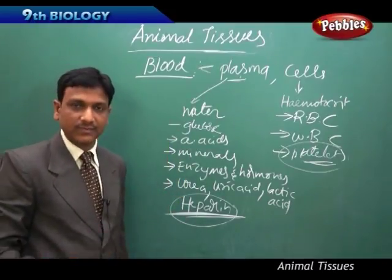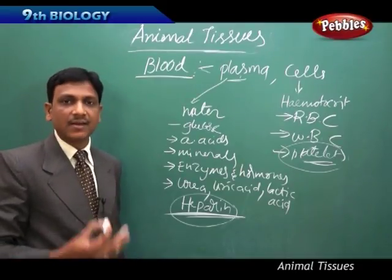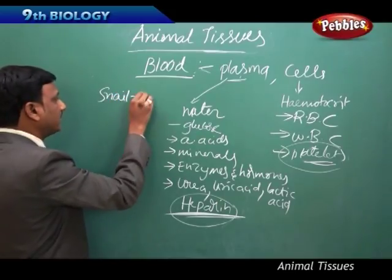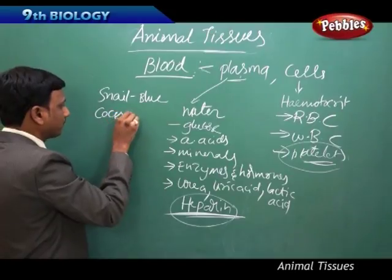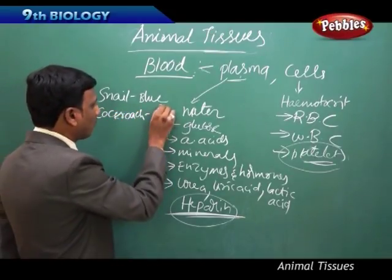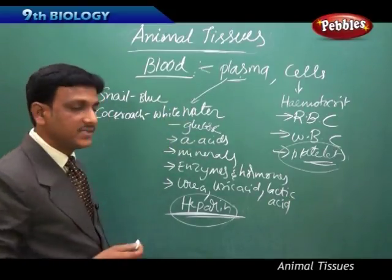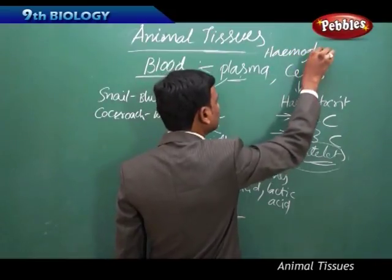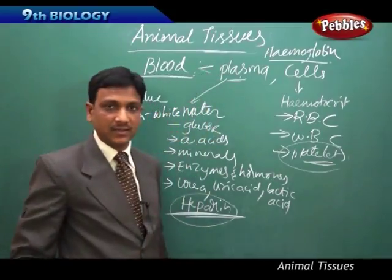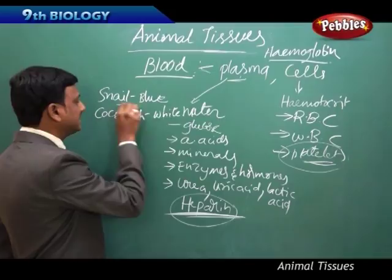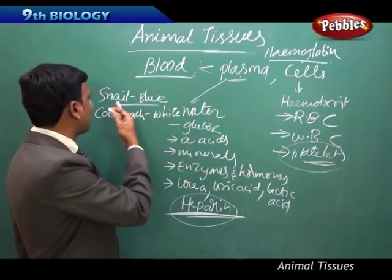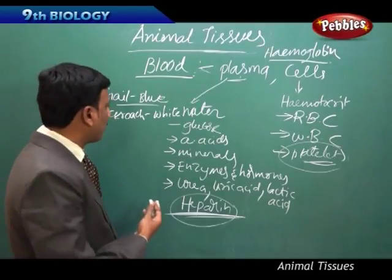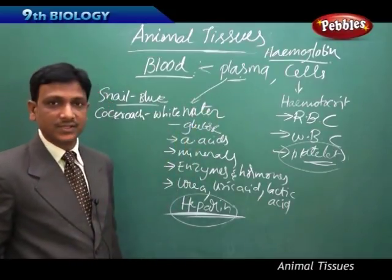Generally blood is red in color in most mammals and vertebrates, though there are some exceptions. In the case of a snail, the blood is blue in color; in the case of a cockroach, the blood is white. The color of blood is due to pigment. Our blood is red because of the pigment hemoglobin. The snail has a different pigment called hemocyanin, making it blue. The cockroach has no color pigments, so its blood is white.